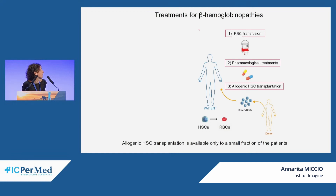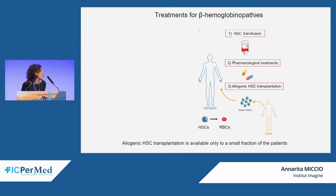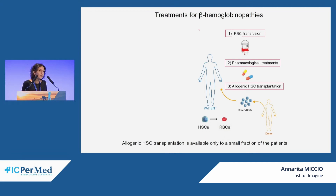Allogeneic hematopoietic stem cell transplantation gives rise to normal red blood cells in the patient. Unfortunately, this approach is available only to a small fraction of patients — those lucky enough to have a compatible donor.